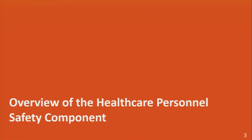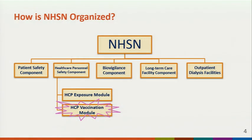Now we'll go over some of the basic elements of the healthcare personnel safety component. NHSN is divided into five components: patient safety, healthcare personnel safety, biovigilance, long-term care facility, and outpatient dialysis. Each component can have multiple modules. This presentation is focusing on the healthcare personnel safety component, which consists of two modules: the healthcare personnel vaccination module and the healthcare personnel exposure module.